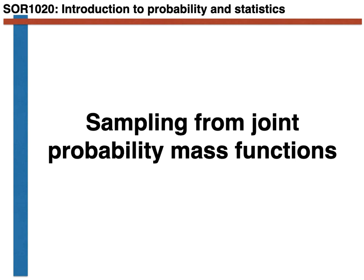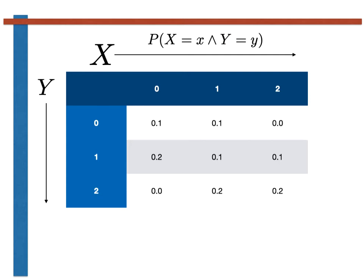Hello, in this video I want to show you how you can write a computer program to sample from the joint probability mass function. As you have learned from my previous video, we can display the joint probability mass function for the pair of random variables X and Y in a table as shown here.